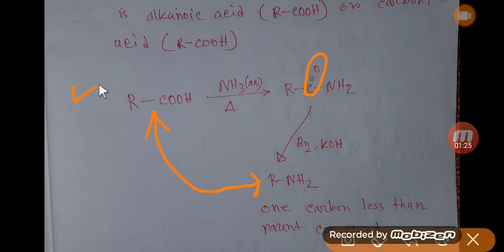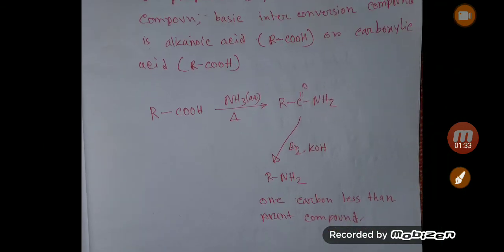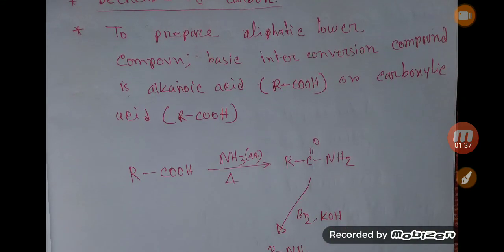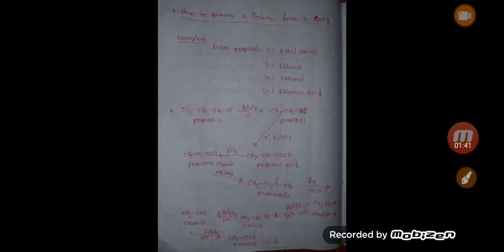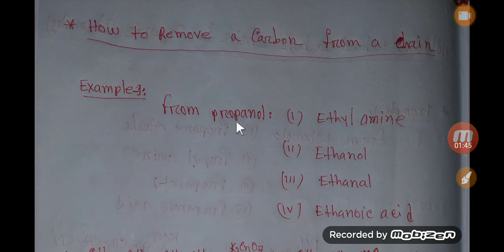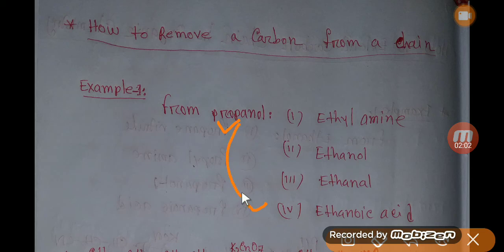Please look at this reaction closely and you will understand what I want to say to you. Now we will go to the practical example so that we can easily understand. We will convert propanol to ethanoic acid. Here you see, ethanoic acid has two carbons. On the other hand, propanol has three carbons. Through this conversion, we will also learn how to convert ethylamine, ethanol, and ethanol. All these compounds have two carbons, but only propanol has three carbons.